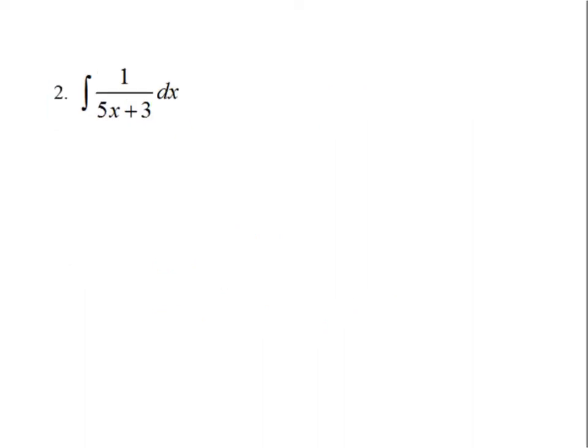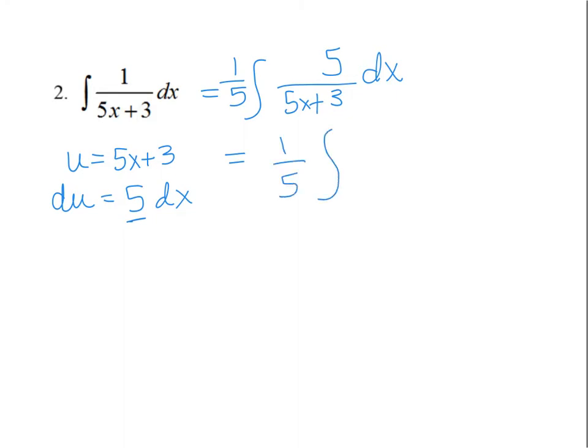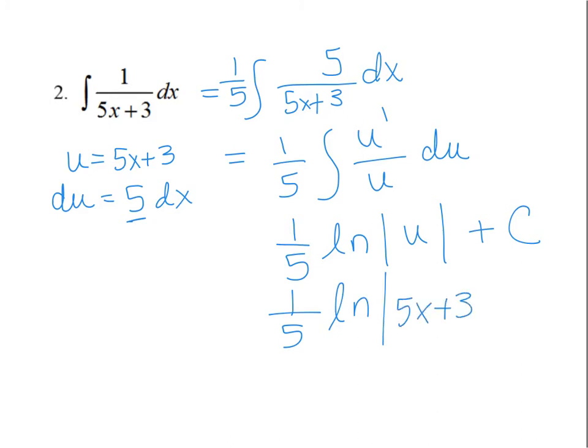So this next one looks like it's a u substitution. So let's rewrite this as, and let u be 5x plus 3, dx. So du would be 5 dx. So if I rewrite this, I have 5x plus 3 dx. I need a 5 and a 1 fifth. And so if I rewrite as a u, this would be 1 fifth u prime over u du. So the integral of that would be 1 fifth natural log absolute value of u plus c. So that's 1 fifth natural log of 5x plus 3 plus c.